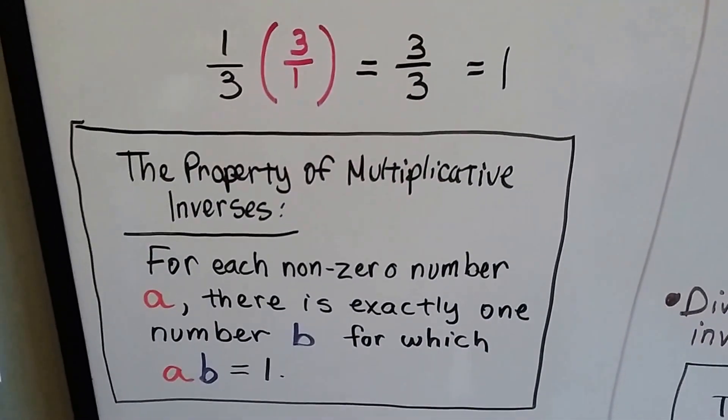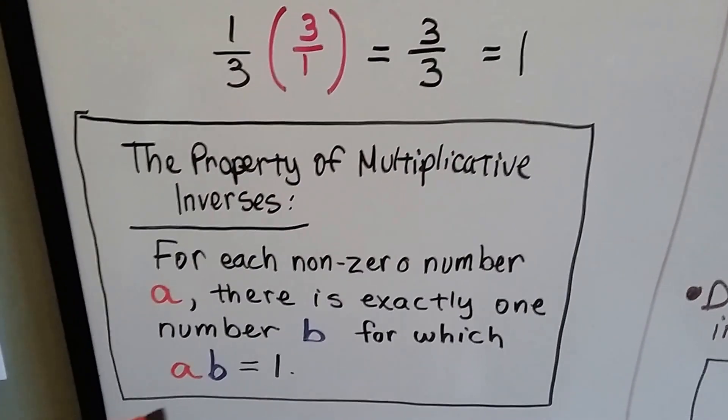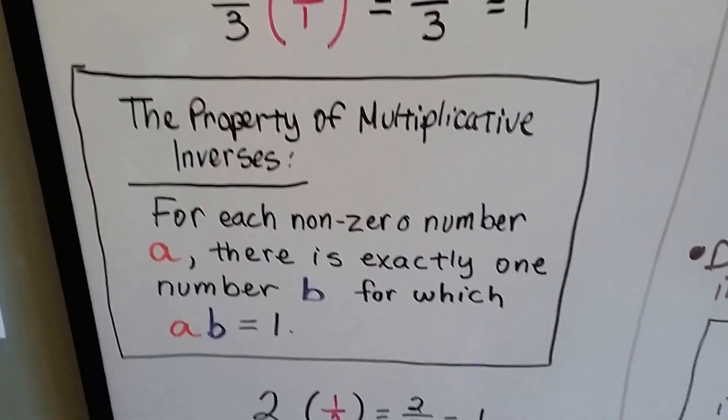The property of multiplicative inverses says for each non-zero number a, there's exactly one number b that we can multiply a times b, and it'll equal 1.